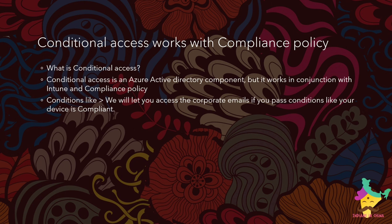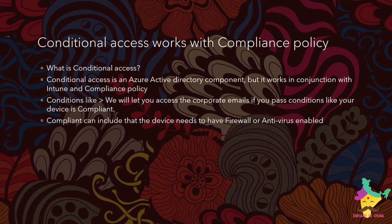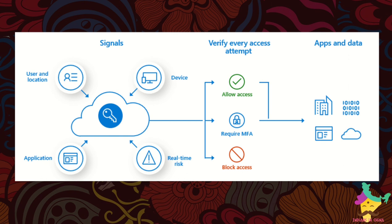हम इसके अंदर detail में जाएंगे demo के अंदर, जब हम conditional access policy को create करेंगे — तब आप देखेंगे क्या-क्या conditions और हो सकती हैं। Compliant can include that the device needs to have firewall or antivirus enabled। अब ये आप हो — user — और ये आपका device है। Real time risk, application — ये सब की सब चीज़ें एक cloud के अंदर से हैं — cloud मतलब Azure platform, internet। चाहे वो आपका device हो, कोई भी user हो, कोई भी location हो, application हो — उसके हिसाब से conditional access policy behave करेगा।